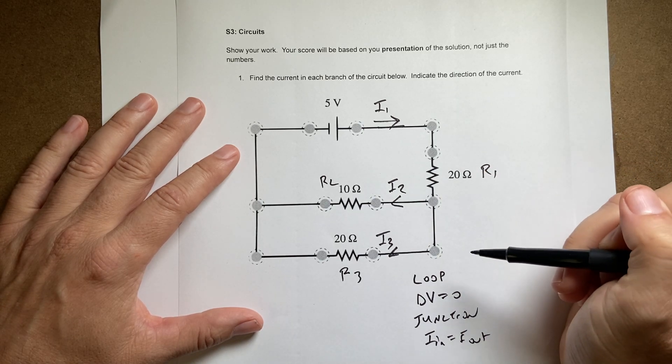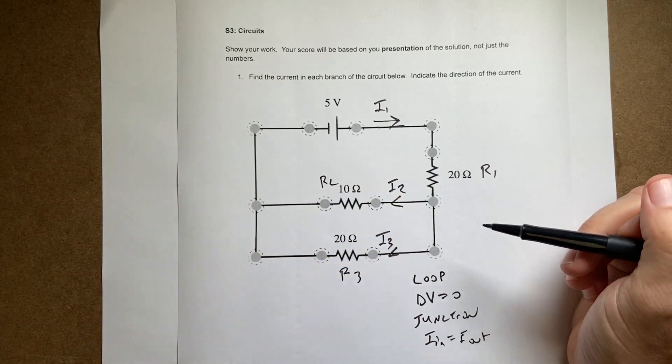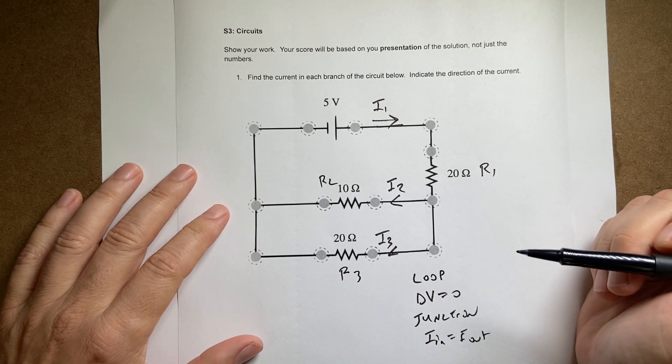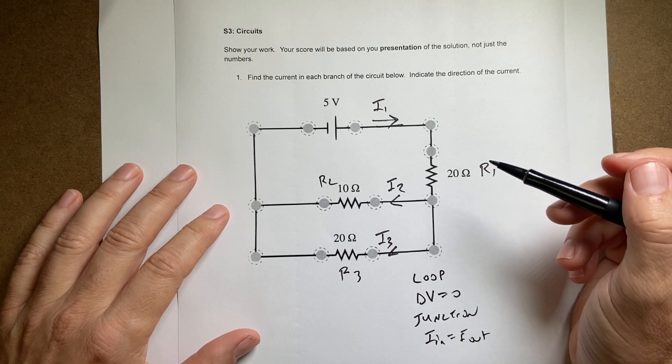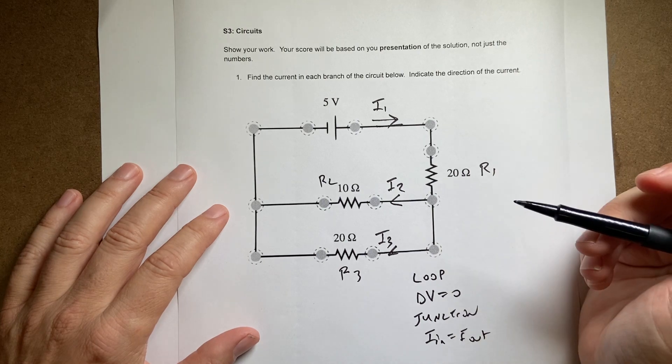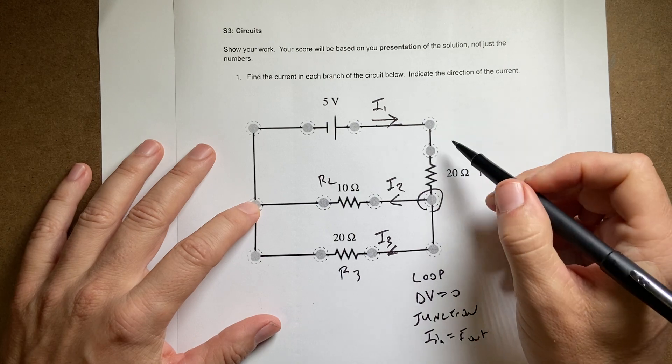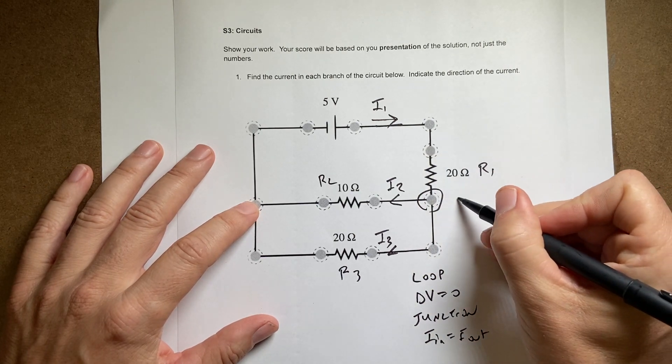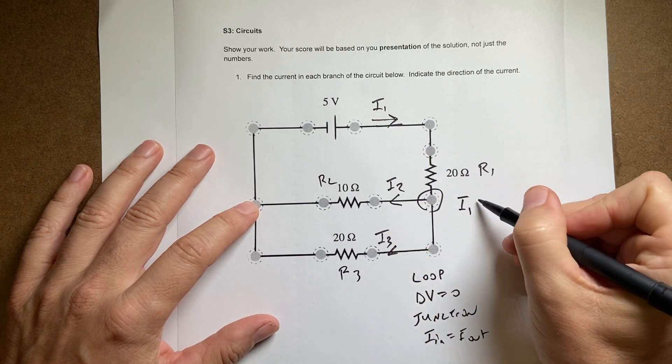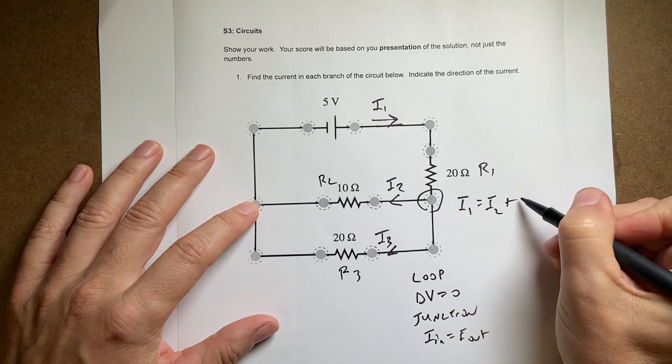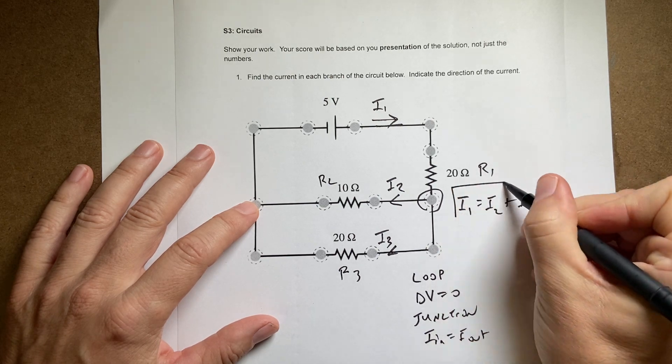Okay so we need to get three equations since I have three variables. I need three equations to solve this problem. So let's just start with our junction rule because here is a junction and here's a junction. So right here I have the current I1 coming in and then I2 and I3 coming out. So there's one equation.